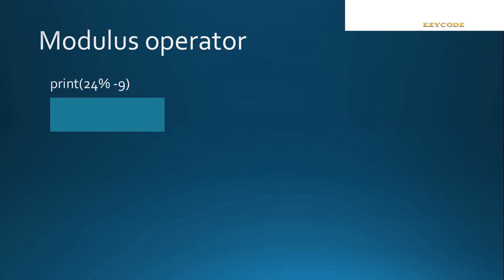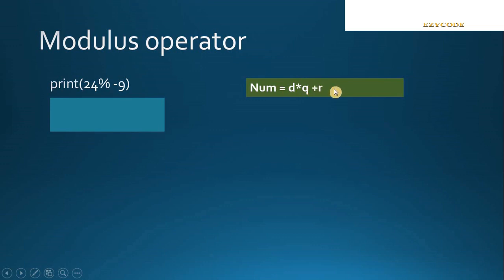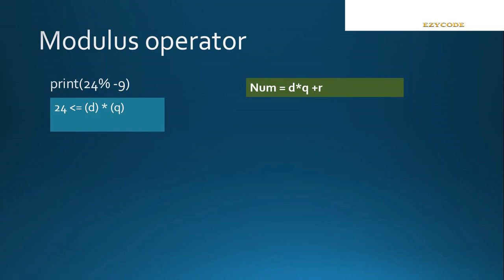In this video the first question is 24 modulo minus 9. Normally in mathematics we know that the numerator equals the denominator multiplied by quotient plus R. This is the basic fundamental concept of mathematics. If you are trying to find out the remainder of negative values, you have to follow some techniques. For some time you just have to forget about the negative sign or positive sign of the numbers and follow how we are calculating the remainder.